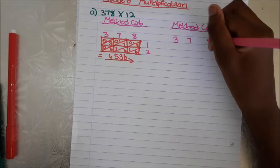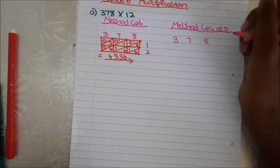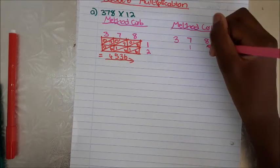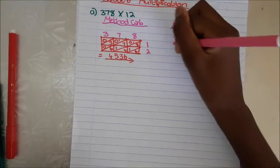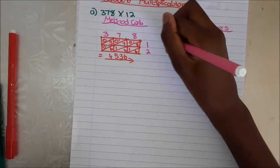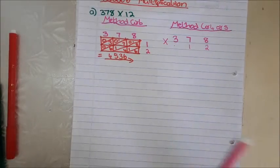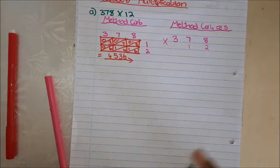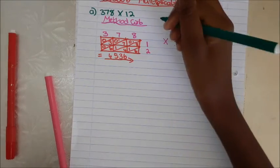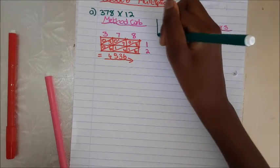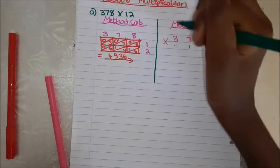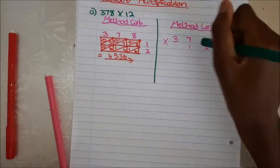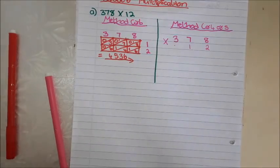So now I write 3, 7, 8, then write 12 underneath, then put the times sign. I'm going to put a divider here — Method 1 and Method 2.